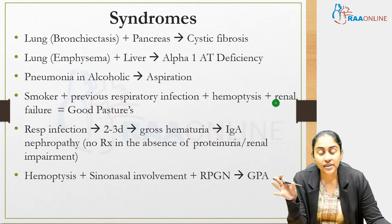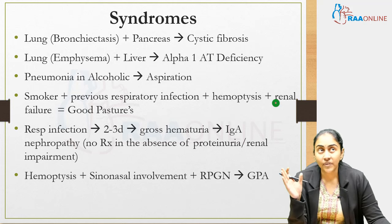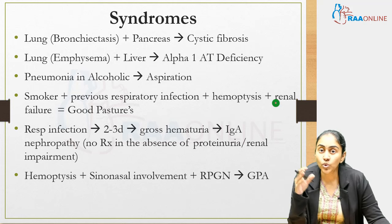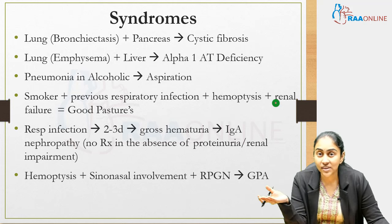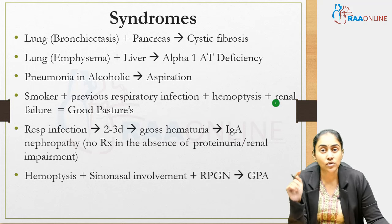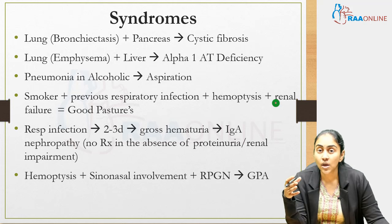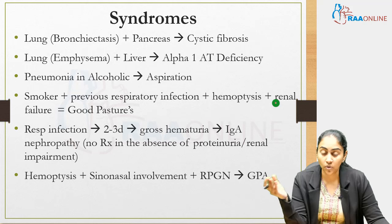When the same respiratory infection occurs but two to three weeks later there is description of glomerulonephritis — with both hematuria and proteinuria — then it is not IgA nephropathy. We are looking at post-streptococcal glomerulonephritis.